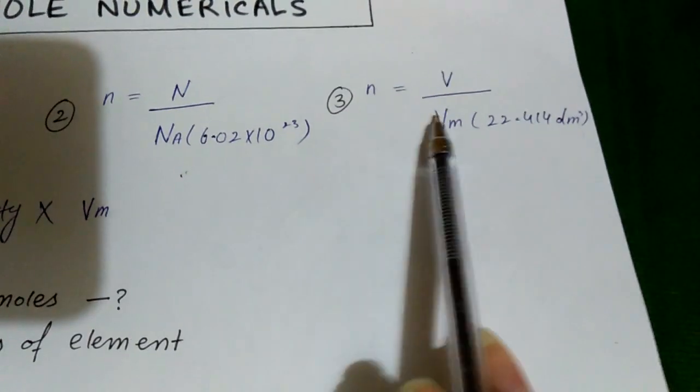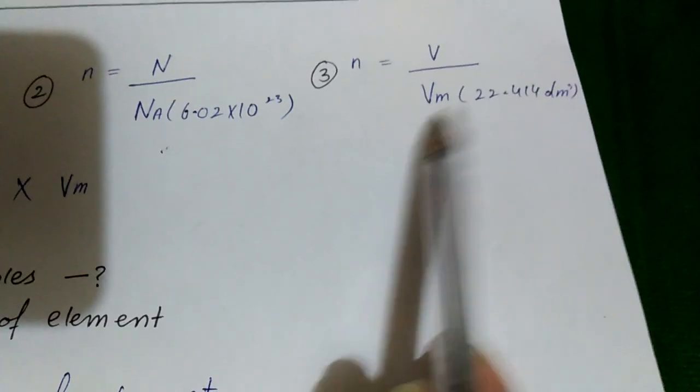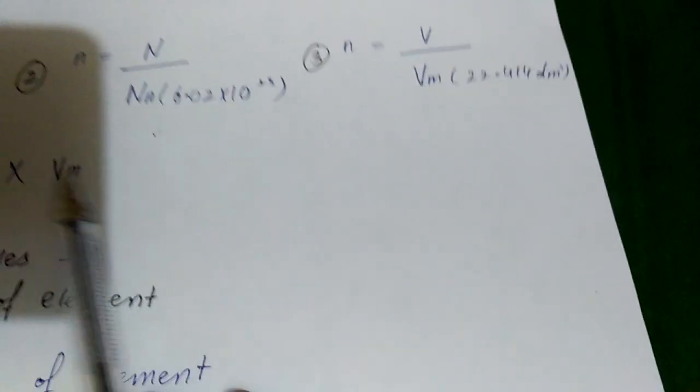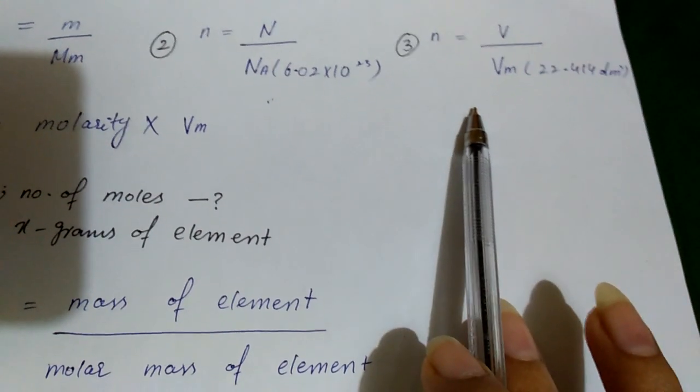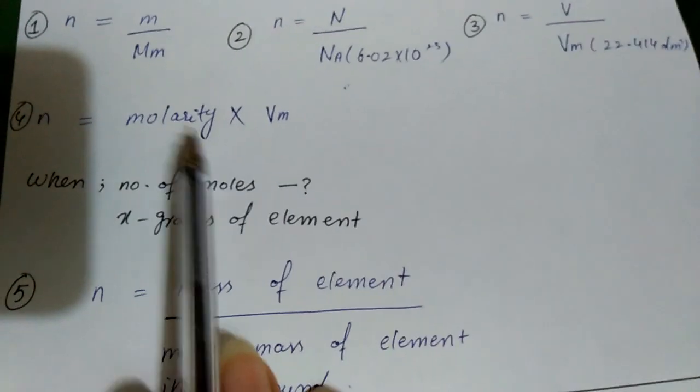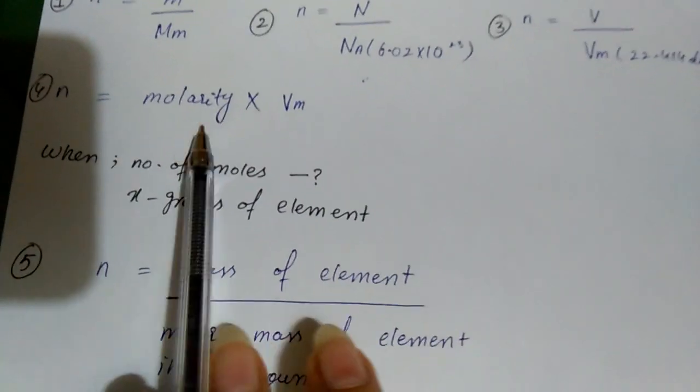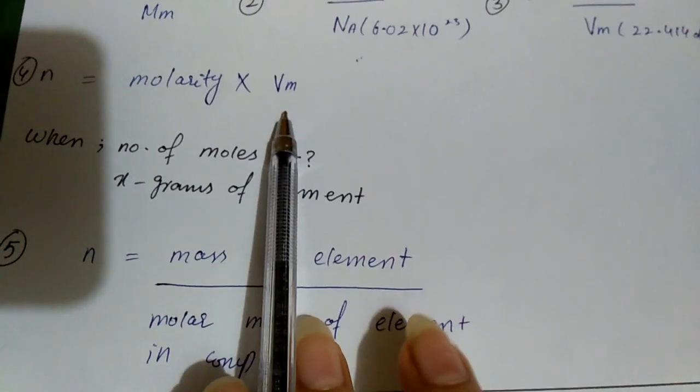Next comes the number of moles is equal to given volume by molar volume. You don't need to remember it, and while using this formula we can find number of moles very easily. Next comes the number of moles is equal to molarity into molar volume, and here is our fifth formula.